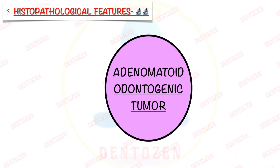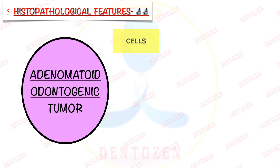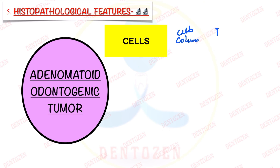Before we proceed, let's first understand what are the different things present in the histopath of this tumor. Adenomatoid Odontogenic Tumor is a diverse tumor and has different types of components. The first thing is cells — it has different types of cells: cuboidal cells, columnar cells, polyhedral cells, and spindle cells.